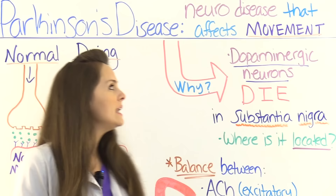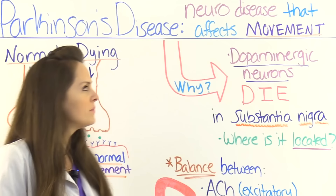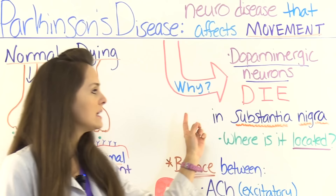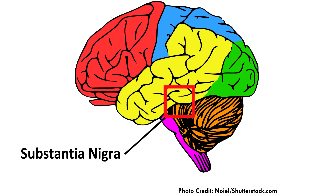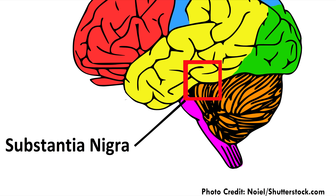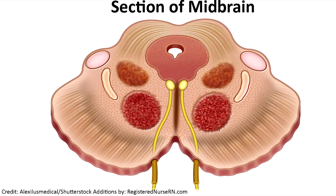Now why is movement being affected? Well, these dopaminergic neurons start to die that are located in the substantia nigra. Now where is the substantia nigra located? If you were to look at the side of the brain here where the red square is, you would see where the substantia nigra would be located, and this area is part of the basal ganglia which is part of the midbrain that controls our movement.